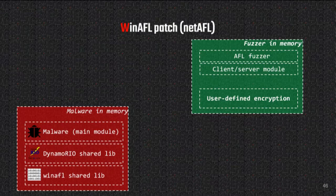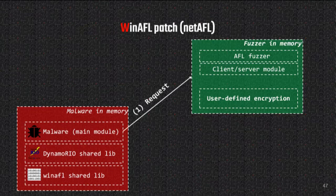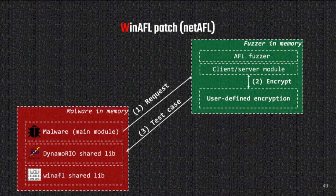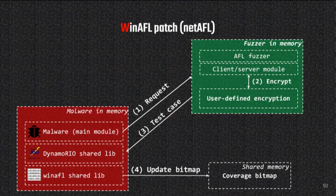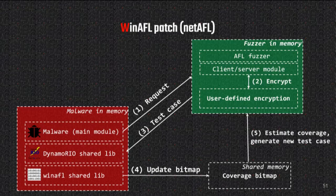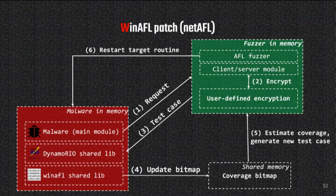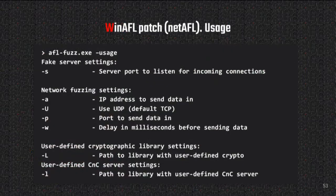Suppose we have our fuzzer and our malware instrumented by DynamoRIO in memory. When the sample sends a request to CNC, instead of actually sending it, we redirect the request to our fuzzer. The fuzzer generates a new test case, encrypts it if necessary, and sends the response back to our sample. Then we update our coverage bitmap, estimate code coverage, provide it back to the fuzzer, and the fuzzer generates a new test case, restarts the sample or target function, and repeats. All you need is to specify an IP address, port to listen on, and a seed file.